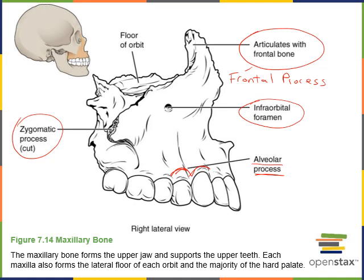There is also a palatine (palatal) process that forms the anterior two-thirds of the hard palate. Extending posterior from the teeth is a process of bone forming the roof of the mouth — the palatine process of the maxilla.